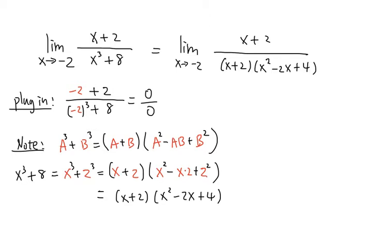And then notice that we have the x plus 2 on the top. And that can be cancelled with this x plus 2 on the bottom. This is what we're going to get. This is the limit when x approaching to negative 2. We have a 1 on the top over this x squared minus 2x plus 4.